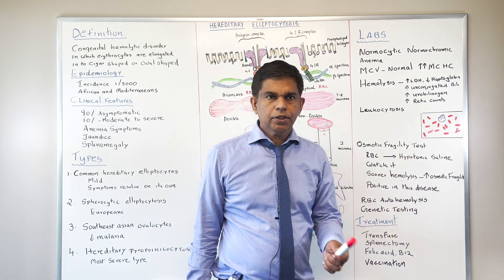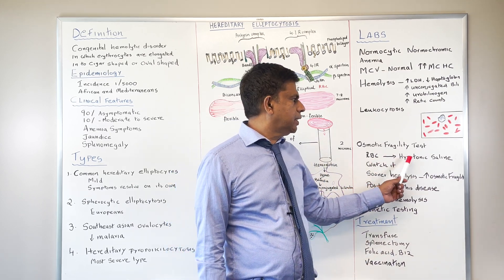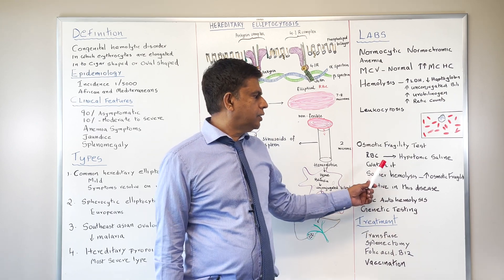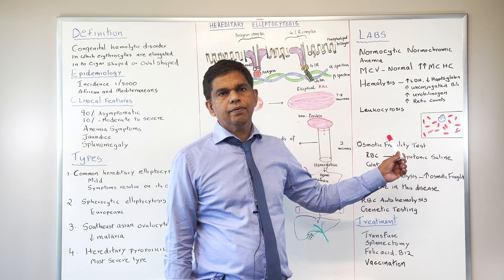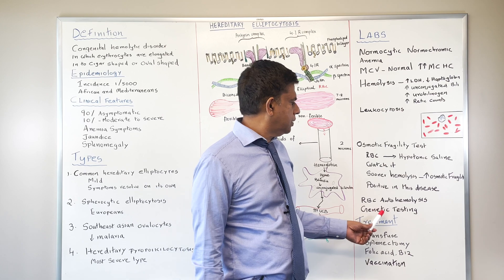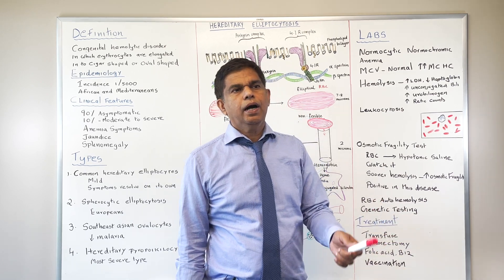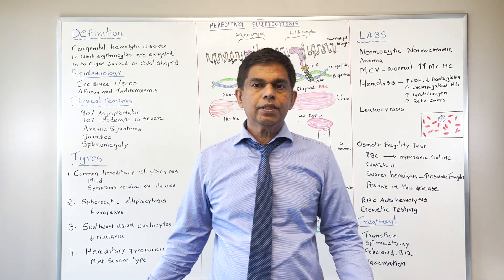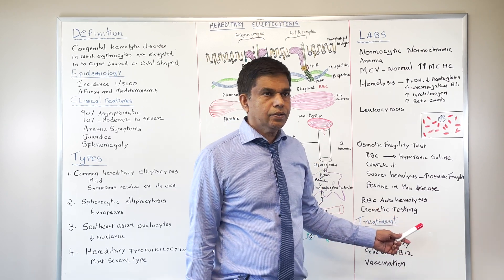For diagnostic tests, you can do an osmotic fragility test: take the RBCs, put them in hypotonic saline, and watch — sooner hemolysis indicates increased osmotic fragility, which you'll see in this group. You can also do RBC autohemolysis, where RBCs are placed in a sterile solution and the rate of hemolysis is measured — it will be faster in this group. Genetic testing is also available.